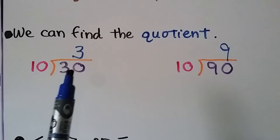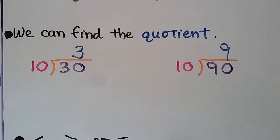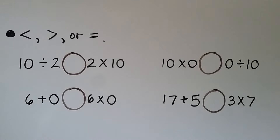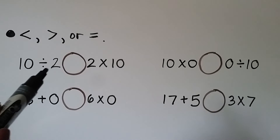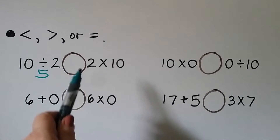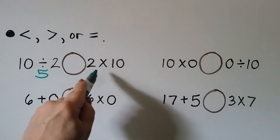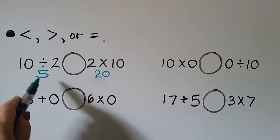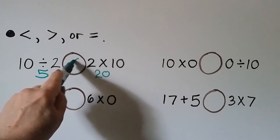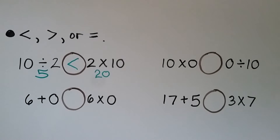Now we need to find less than, greater than, or equal to, and write it in the circle. The best way is to solve each side. For example: 10 divided by 2 is 5, and 2 times 10 is 20. Since 5 is less than 20, we put a less than sign.